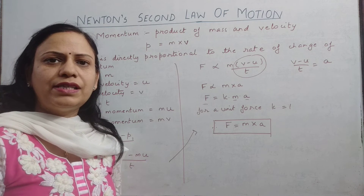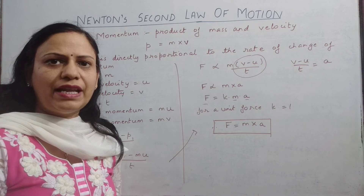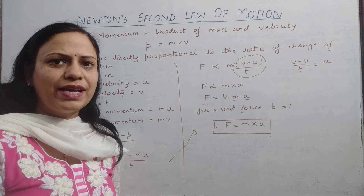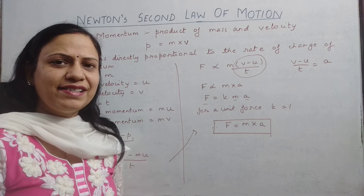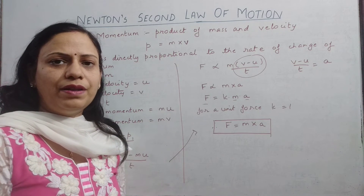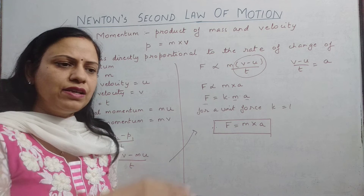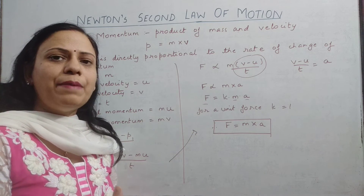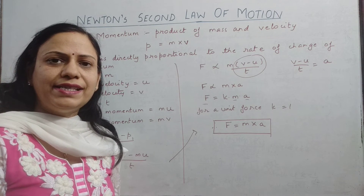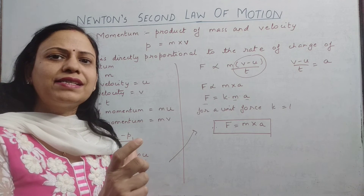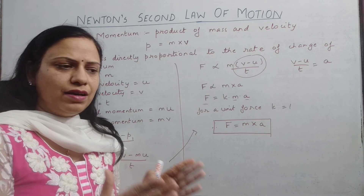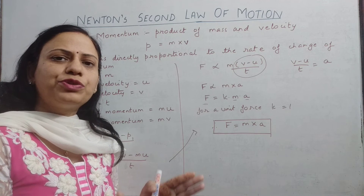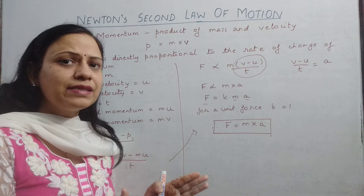Similarly, high jumpers jump on sand pits and never on concrete floors. Sand is compressible, so when landing on a soft surface, the time of impact increases. As the time increases, the impact of the force decreases, because the change in momentum is the same but it occurs over a longer time, reducing the force experienced.